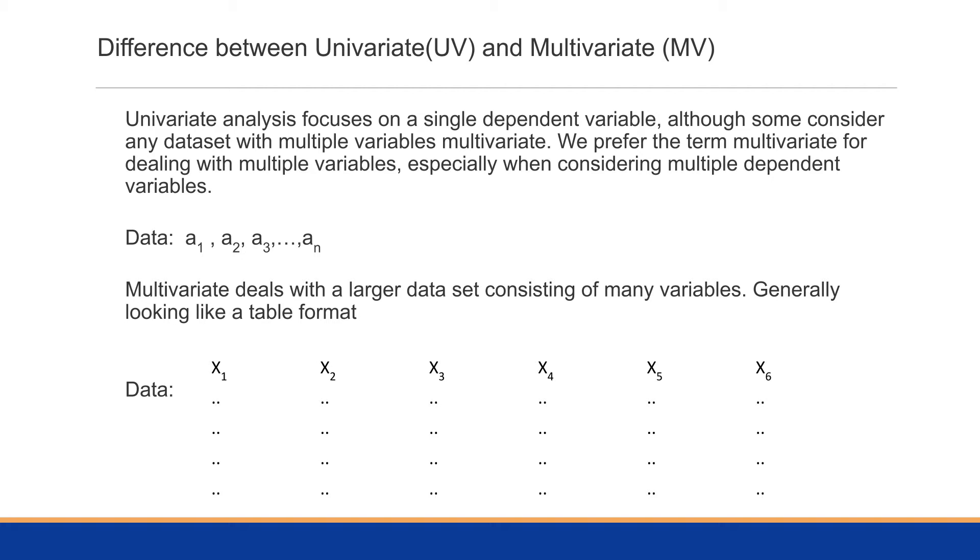Here we might have data in terms of different variables a1, a2, a3 and so forth. The multivariate will deal with the larger set of many variables which we'll call x1, x2, x3, and generally it'll be in this table format. But we won't focus on one particular response such as x1; we'll focus on how x1 through x3 relate to x4 through x6.